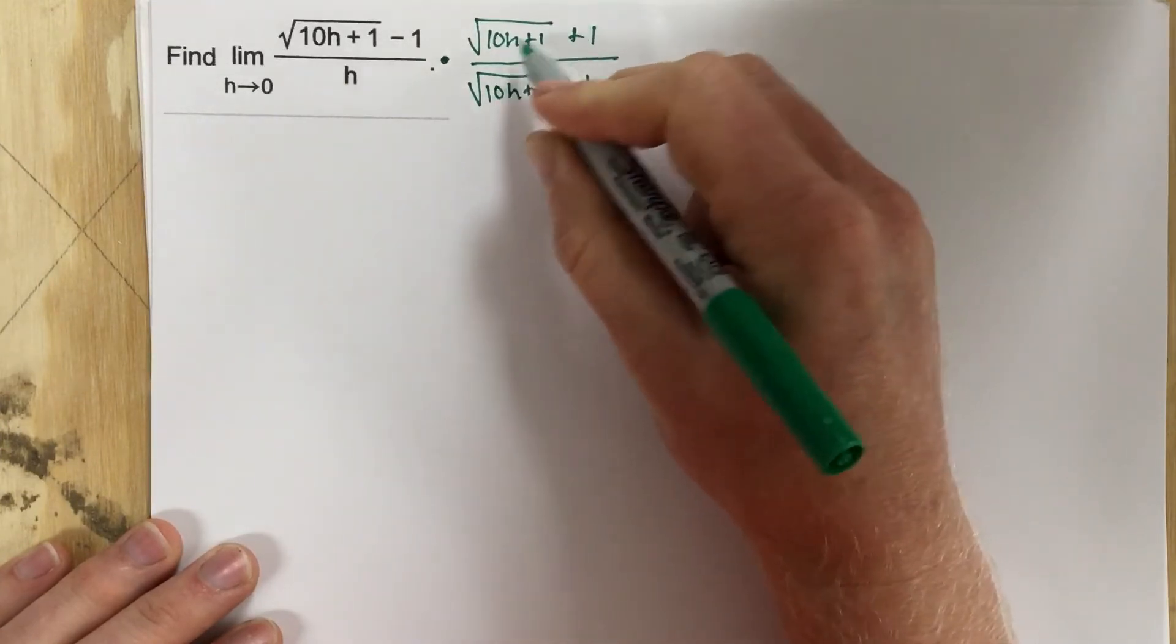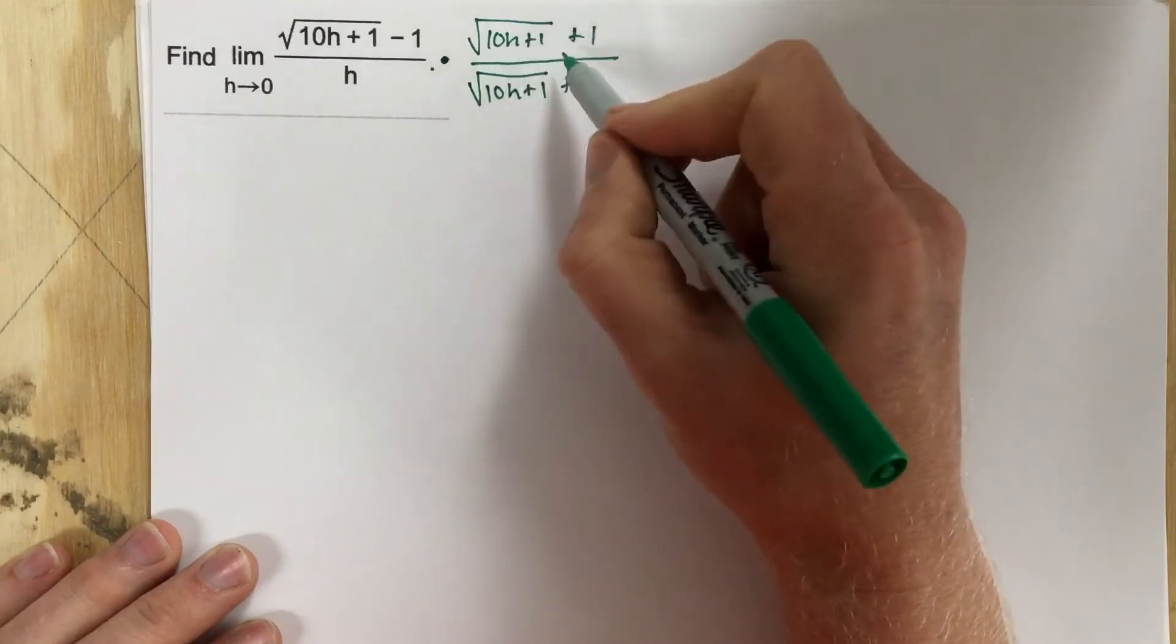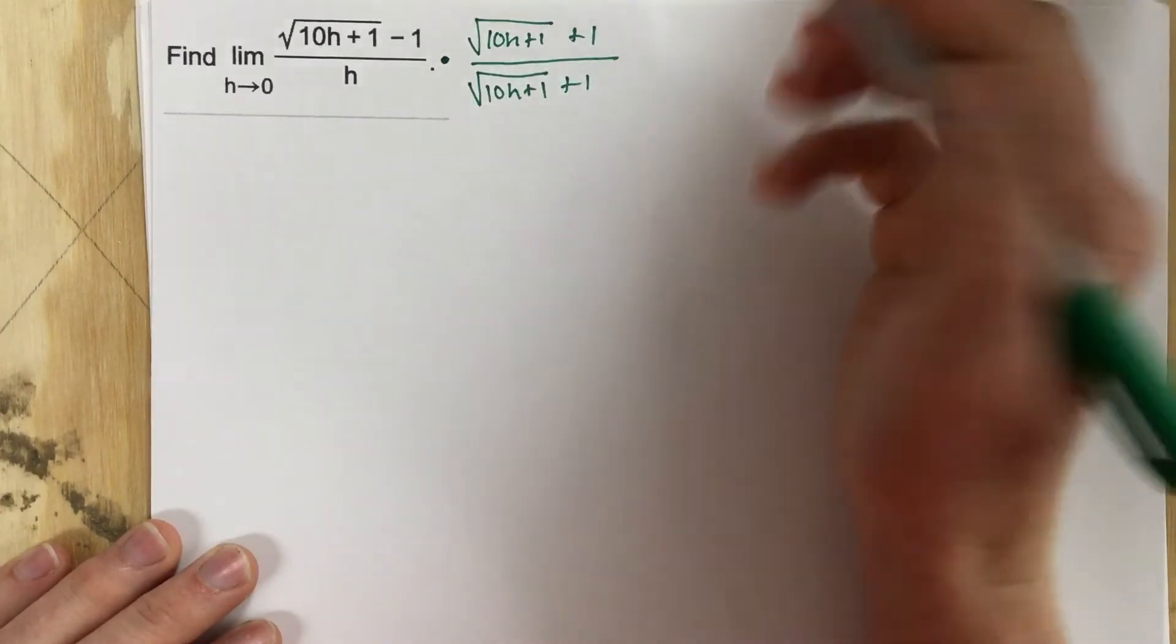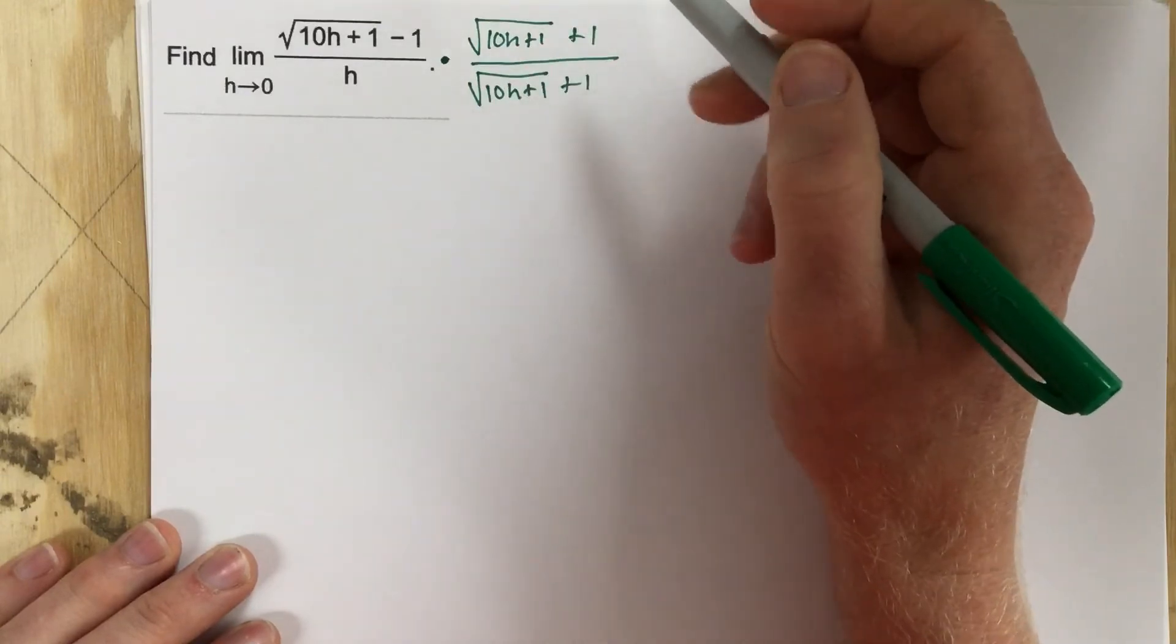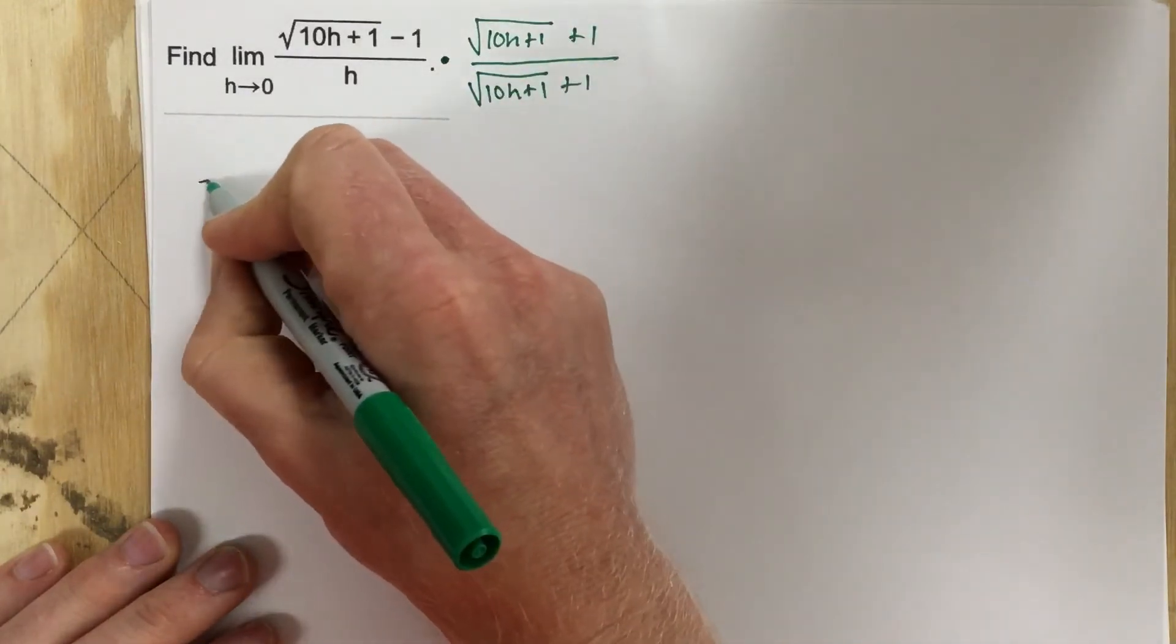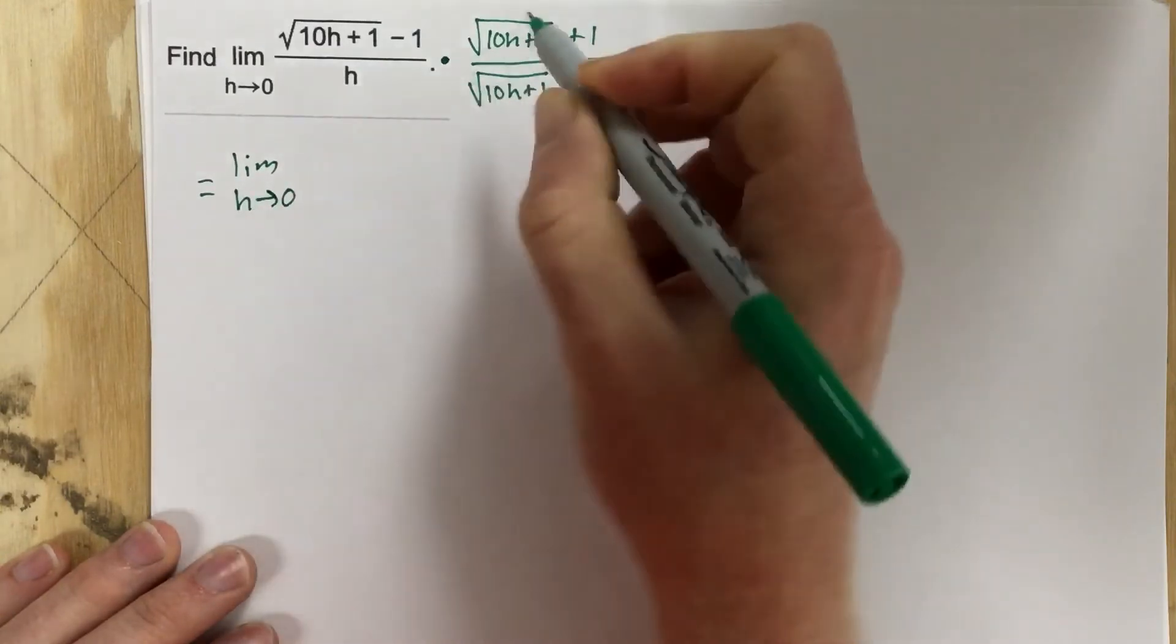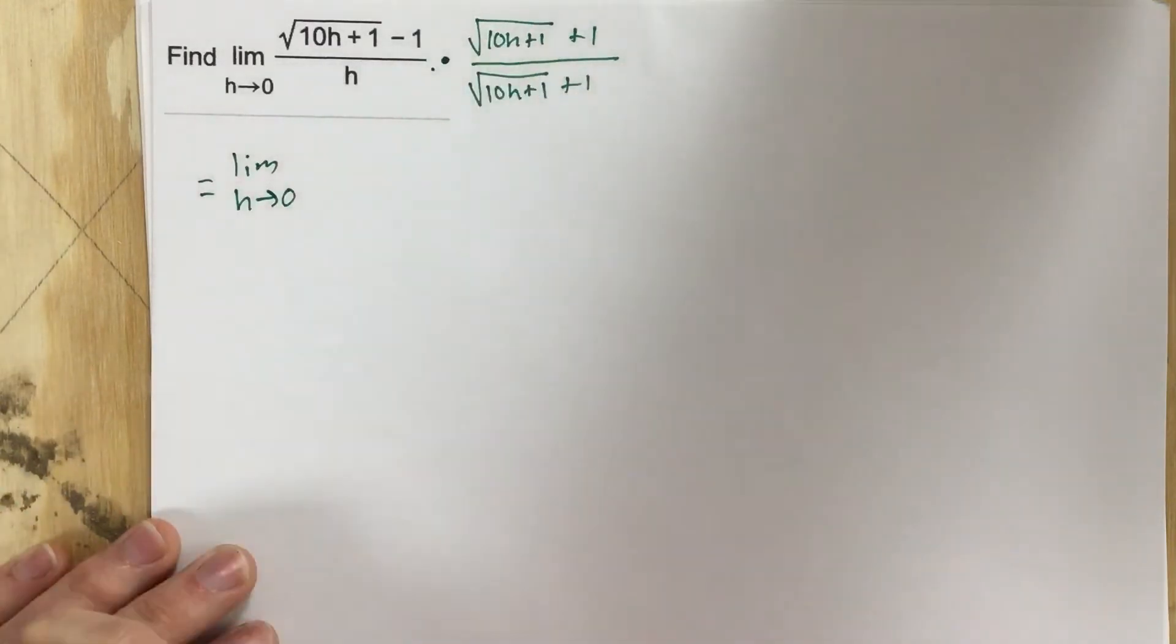Now this is just multiplying by 1, essentially, because I'm multiplying by a fraction that's the same on the top and the bottom. So I'm multiplying by 1.